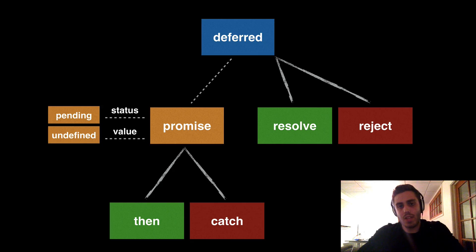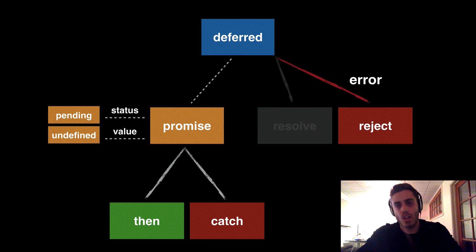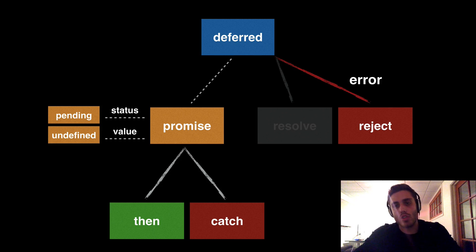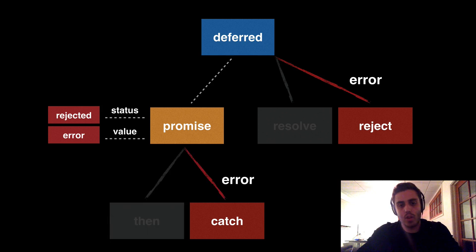We resolved a promise with a value and went down the green branches. But if we get an error in our asynchronous request, we can go down the red branches instead and reject the promise. When you reject a promise, you can pass in any value, but normally you pass in a JavaScript error object. Say something went wrong — our server was down — and we choose to reject this promise with a 404 error. The resolve branch is severed, so if you reject a promise, you can no longer ever resolve it — it's rejected for good. The status updates to rejected, the value becomes the error object, and we go down the catch branch. Anything downstream listening on .then knows this promise errored out — don't execute then, you can catch this error and handle it.